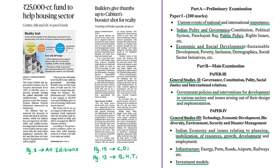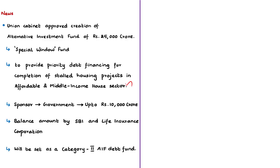This news article states that the Union Cabinet, chaired by the Prime Minister of India, has approved the creation of an alternative investment fund of 25,000 crore rupees. The Union Cabinet approved the establishment of a special window fund to provide priority debt financing for the completion of stalled housing projects in the affordable and middle income housing sector. In simple terms, this fund will provide relief to developers requiring funding to complete unfinished projects, thereby ensuring the delivery of homes to home buyers. According to the government's estimates, there are more than 1,600 housing projects in which 4.58 lakh units are stalled or delayed.